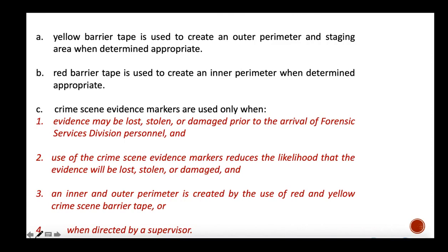The yellow barrier tape is used to create the outer periphery of the crime scene, and the red barrier tape is used to create the inner periphery. For example, over a large area you place the yellow tape, and within that, a smaller area containing the most crucial evidence is enclosed with red tape, where only the investigating officer and forensic experts are allowed to enter.